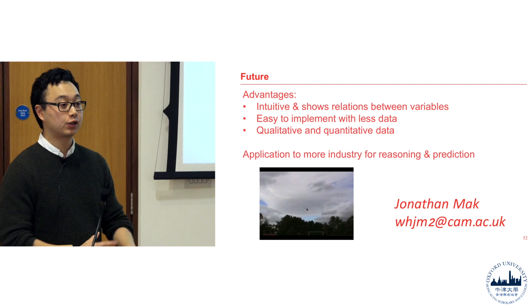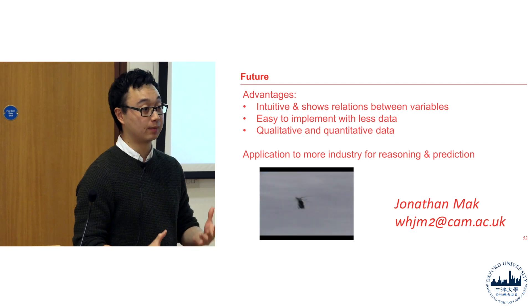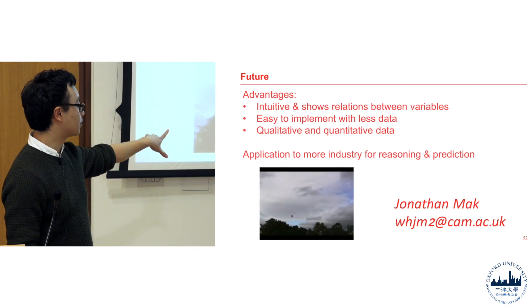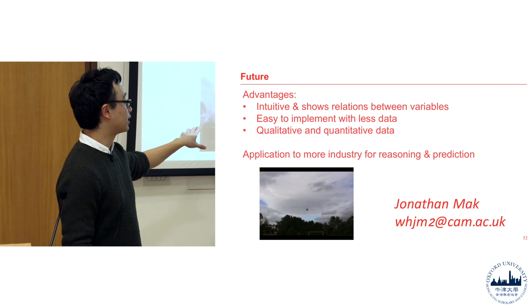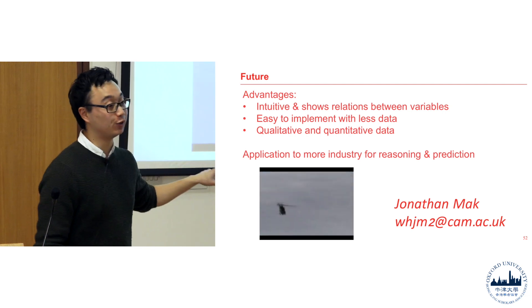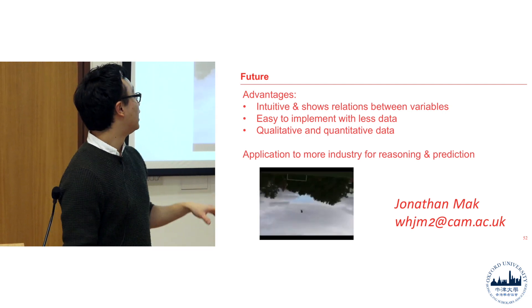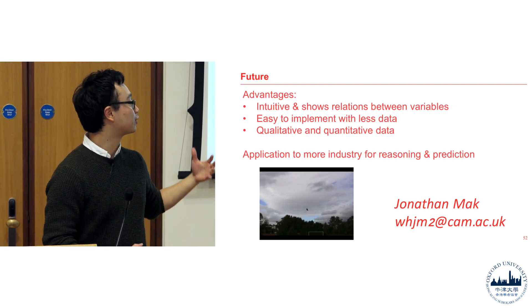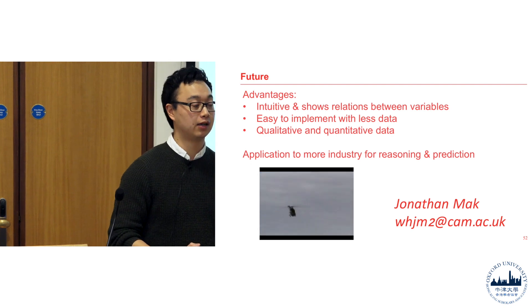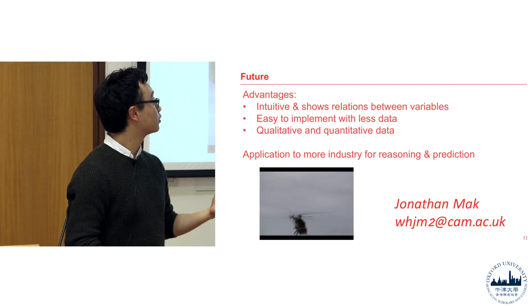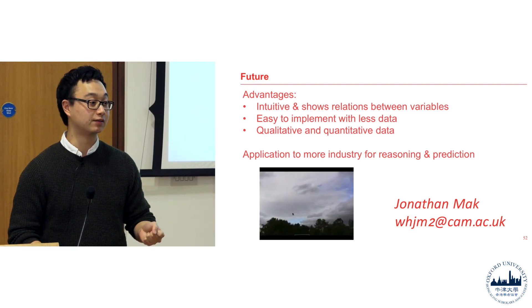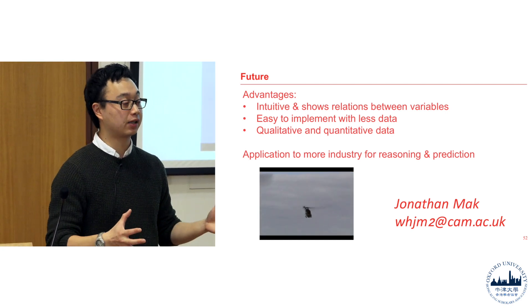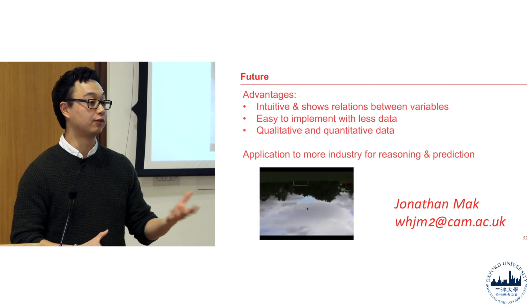Where I think this is most interesting is how these systems support human decision-making. As an example — there's a helicopter flying upside down in the video. A human could do this for maybe three or four seconds, but not in sustained flight. This was done by a machine learning algorithm. Similarly, human reaction speed isn't fast enough to fly a modern fighter jet. The biggest application area, I think, is how we augment human capabilities in the future. Thank you.